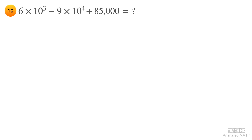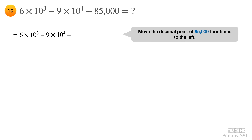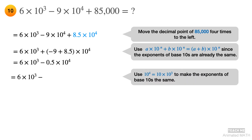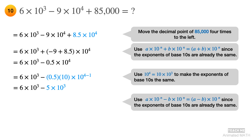What do you do if two numbers are in scientific notation and one number is in regular format? The first thing you have to do is identify the biggest power of 10, which in this case is 10 to the 4th power. Convert 85,000 into a number with a multiplier of 10 to the 4th power — moving the decimal point 4 times to the left gives 8.5 times 10 to the 4th power. You can freely solve negative 9 plus 8.5 since they have the same power of 10. Then multiply 0.5 by 10 and subtract 1 from the exponent 4. Solve 6 minus 5, and the final answer is 1 times 10 to the 3rd power.